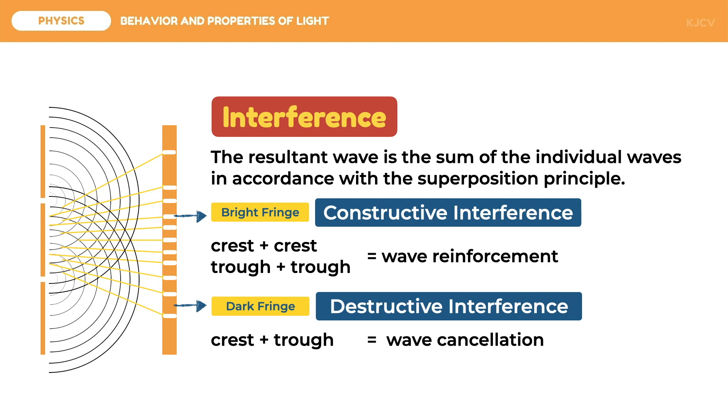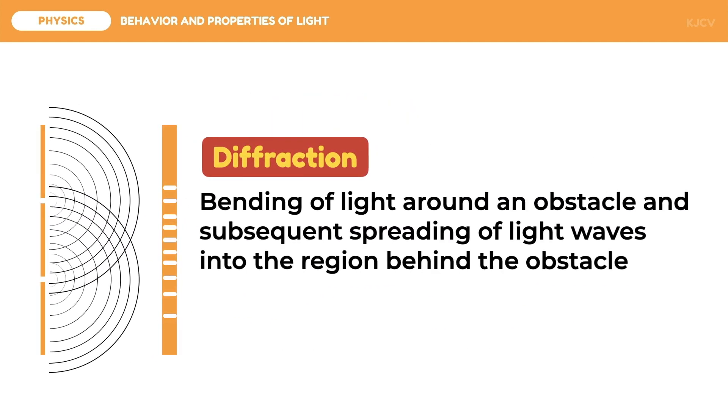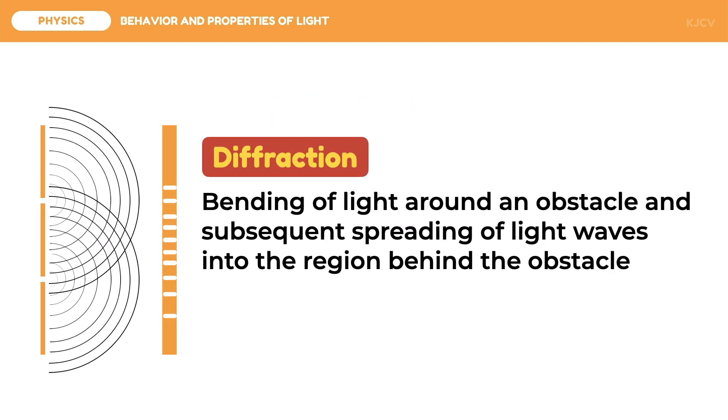Aside from the double slit experiment, interference is evident on thin soap bubble membranes and compact discs. Again, this happened because light as a wave will create new waves or wavelets as it passes through narrow holes or slits. This is called diffraction. Diffraction is the bending of light around an obstacle and subsequent spreading of light waves into the region behind the obstacle.